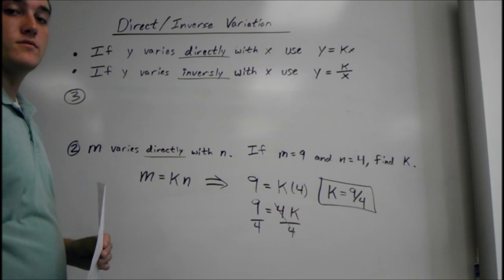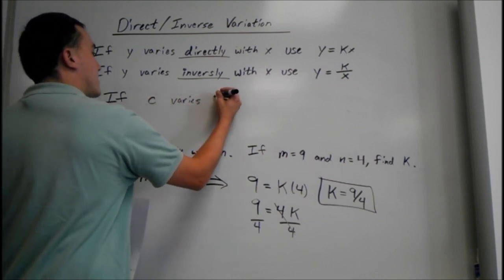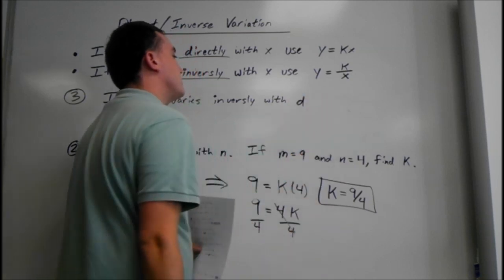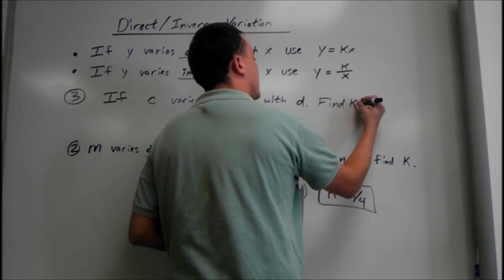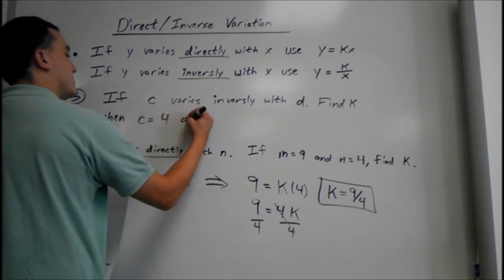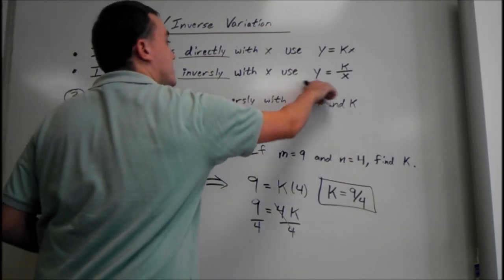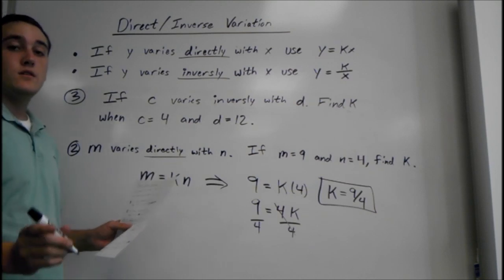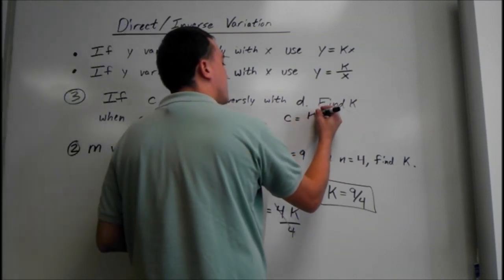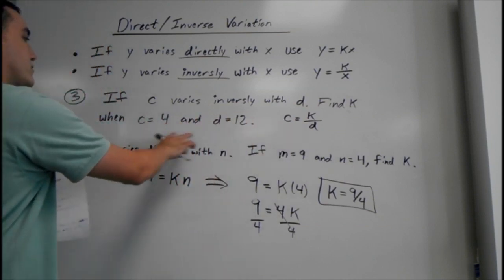The next problem is an inverse variation problem. Say c varies inversely with d — find k when c equals 4 and d equals 12. The first thing we have to do is set up our equation. Since it's inverse variation, c equals k over d. Inversely with d means we divide. Then we can plug in the numbers since we have our equation, with c equals 4 and d equals 12.